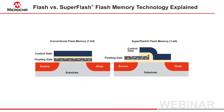Standard flash does it this way. The source, substrate, and drain are raised to a high voltage — let's use 10 volts — and the control gate is grounded. The electrons are pushed away from the grounded control gate and pulled toward the 10 volt substrate. This tunneling oxide is very thin and the electrons tunnel vertically down into the substrate, which cleans all the electrons off and effectively erases the bit.